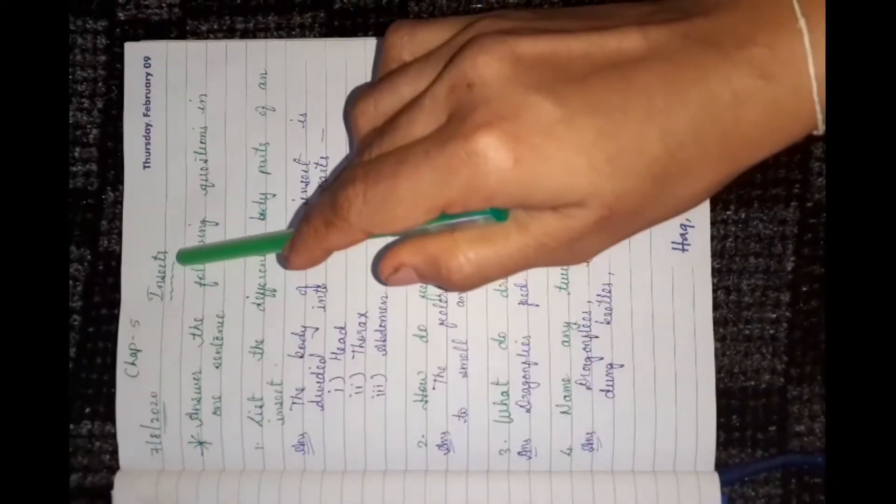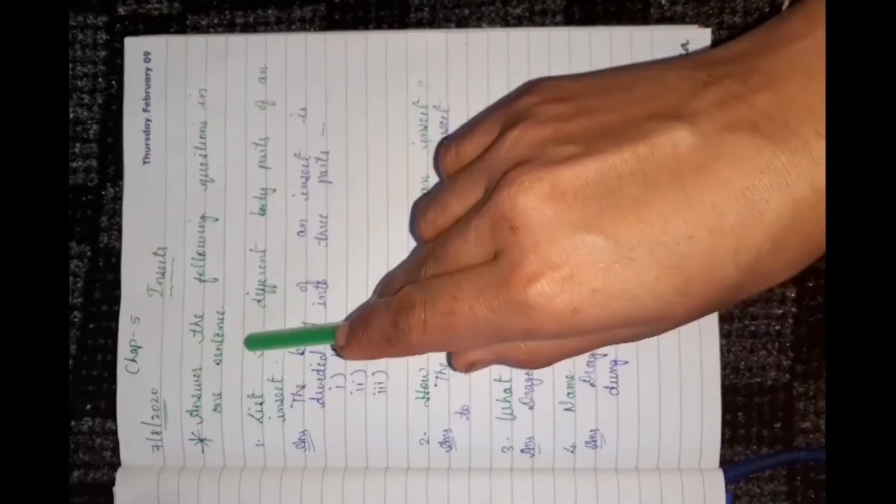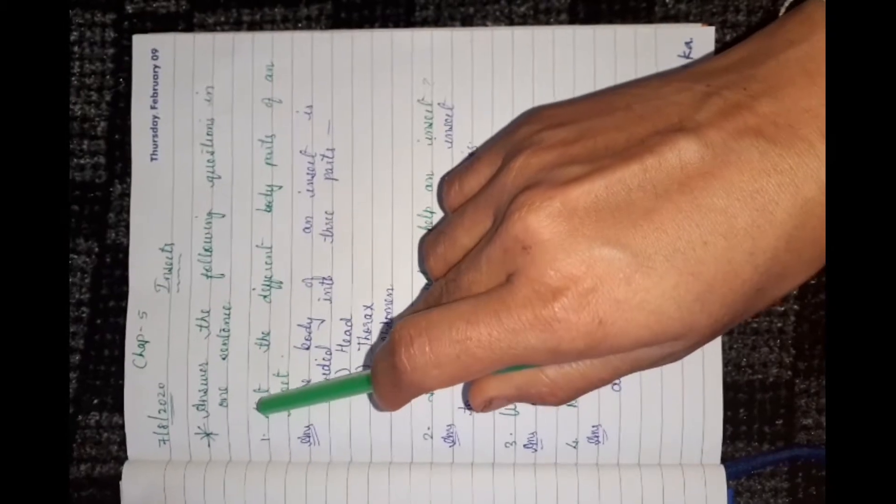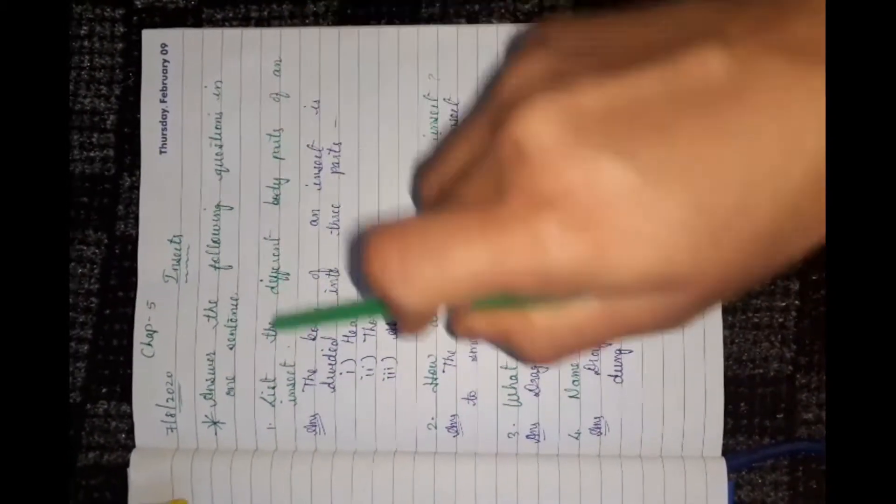Now, dear students, let's take a look at some of the question-answers from the chapter insects. Answer the following questions in one sentence. First question, list the different body parts of an insect.